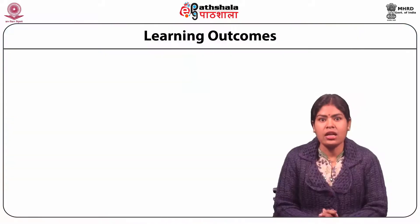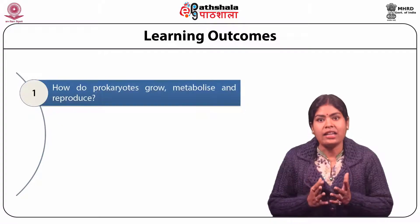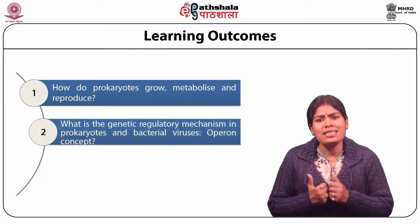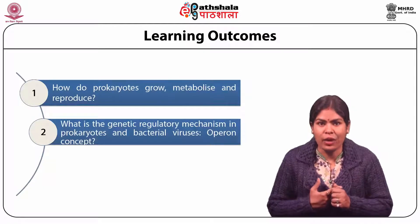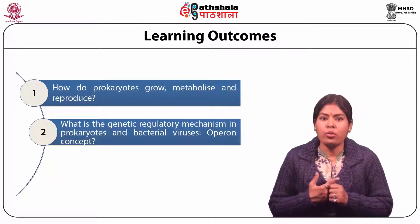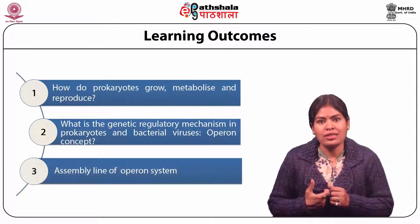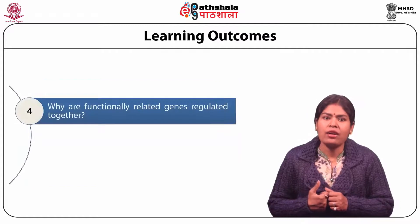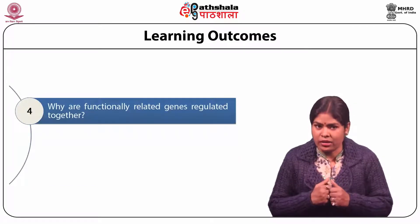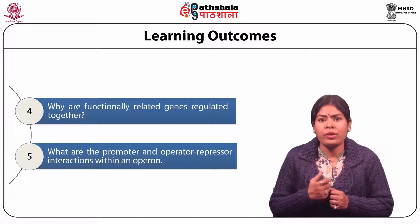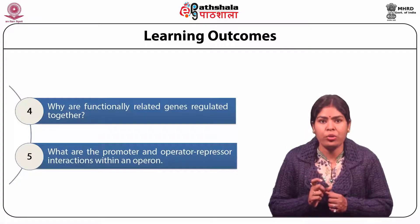Learning Outcomes: how do prokaryotes grow, metabolize, and reproduce? What is the genetic regulatory mechanism in prokaryotes and bacterial viruses? An Operon concept, assembly line of Operon system. Why are functionally related genes regulated together? What are the promoter and operator-repressor interactions within an Operon?